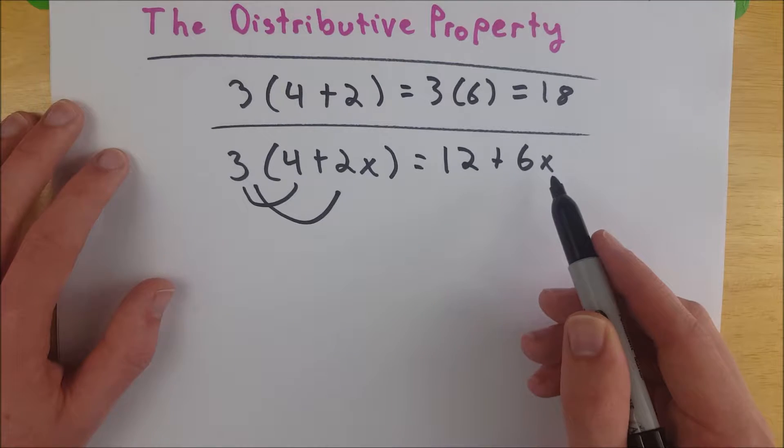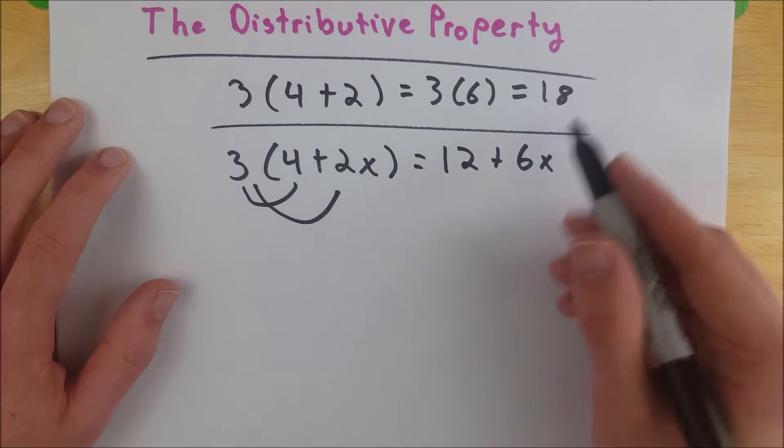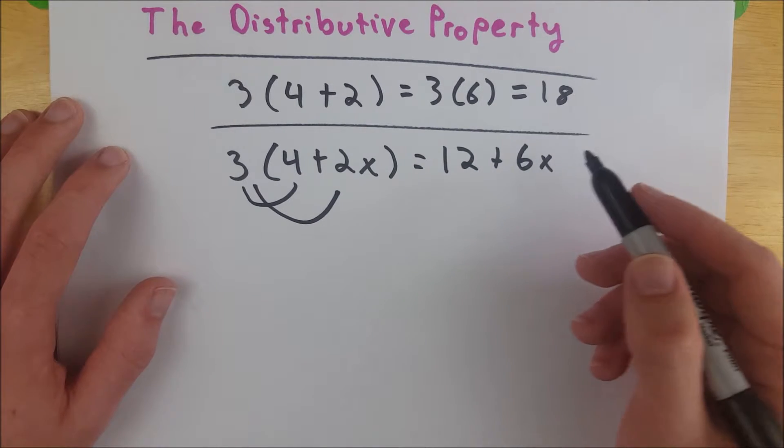And that is how you can simplify this. And we can see if x equals 1, like it did up here where we just had 4 plus 2, then we would get 12 plus 6, which is indeed 18.